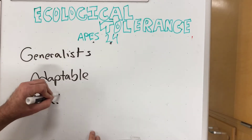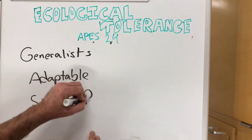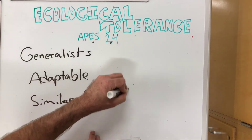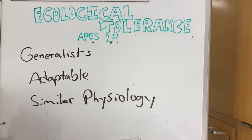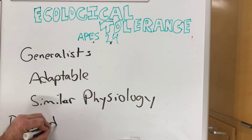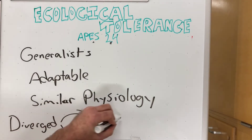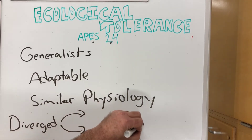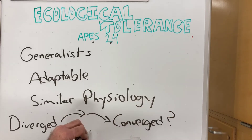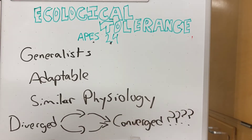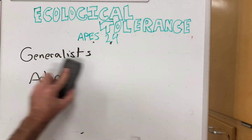Generalists are adaptable, and they have similar physiology — and these bears have very similar physiology to one another. These bears diverged recently, evolutionarily. Will they converge once again? That is yet to be seen.